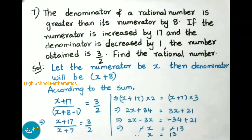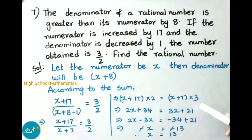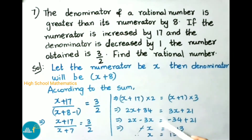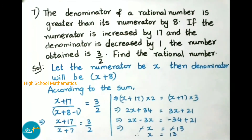Now we have to do cross multiplication: (x + 17) × 2 = (x + 7) × 3. That implies 2x + 34 = 3x + 21. That implies 2x, and on transposing 3x becomes minus 3x, equals 34 on transposing minus 34 plus 21. So 2x - 3x = -x = -34 + 21 = -13. Minus and minus cancel. Therefore x = 13.